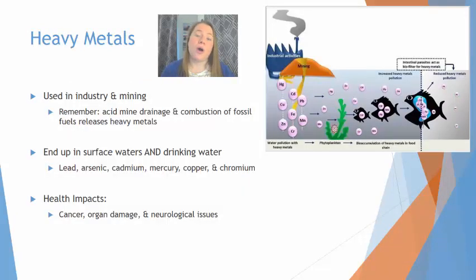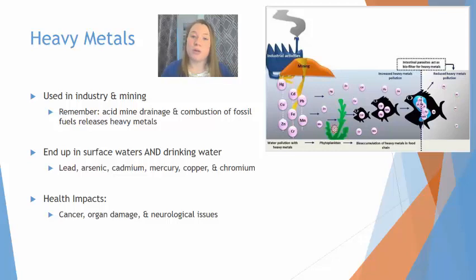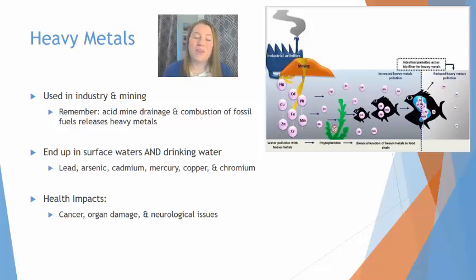Heavy metals are also released into waterways, primarily from industry and mining. We've talked about acid mine drainage releasing acids into aquatic environments, and the combustion of fossil fuels releasing heavy metals such as mercury into the atmosphere, which can also be released into waterways. These heavy metals end up in surface waters, impacting aquatic habitat, and can also end up in drinking water, impacting humans. Examples include lead, arsenic, cadmium, mercury, copper, and chromium — all heavy metals found in aquatic environments that are not normally there. Because heavy metals are dangerous, they can lead to cancers, organ damage, and neurological issues.